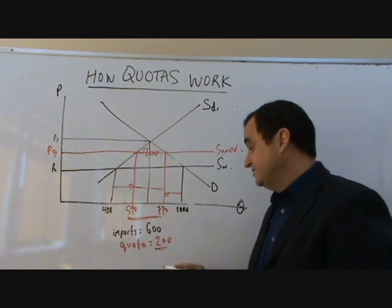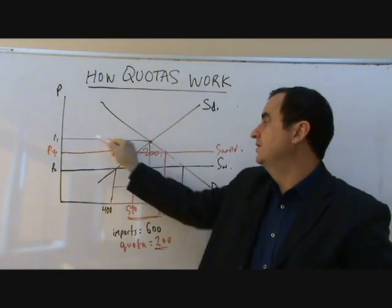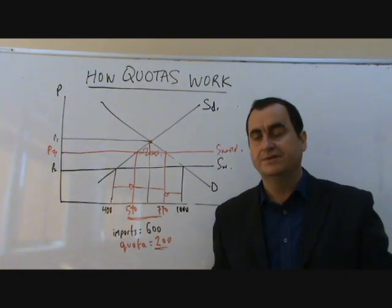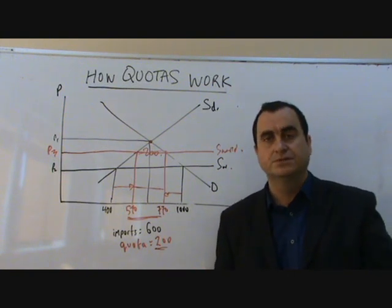Of course, if the quota had been set to zero, then price would have to go all the way up to here, to P1, and there would be no imports allowed. And not allowing any imports in, having a quota set to zero, is called an embargo.